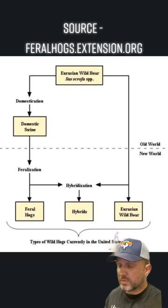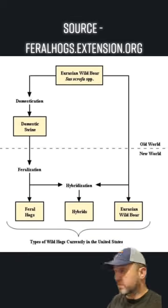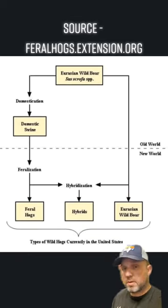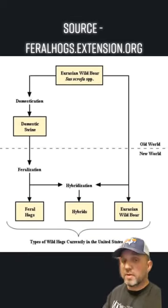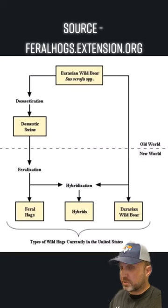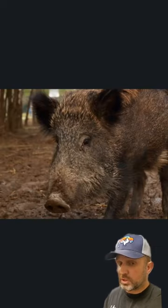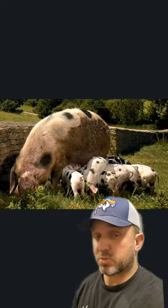There are three different types of species in the United States currently: domestic swine that has gone feral, Eurasian wild boar, and if they breed together — which they do all the time — they become a hybrid. This is a Eurasian wild boar and domesticated swine.